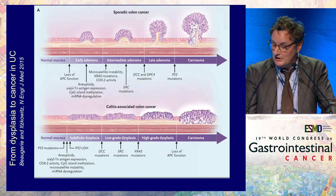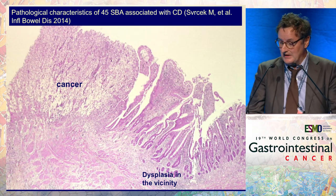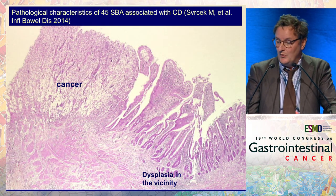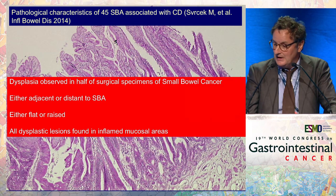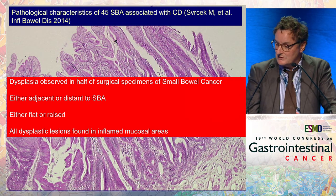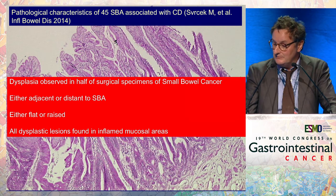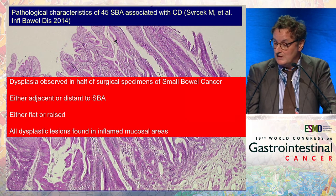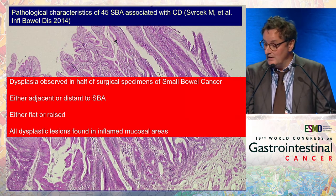In colitis-associated colon cancer, it goes from inflammation to indefinite dysplasia, low-grade dysplasia, high-grade dysplasia, and carcinoma. This is also the same natural history in small bowel cancer. In a small series recently published, we found dysplasia in half of the surgical specimens of small bowel cancer associated with Crohn's disease — either adjacent or distant to the cancer, flat or raised — all within inflamed mucosal areas.